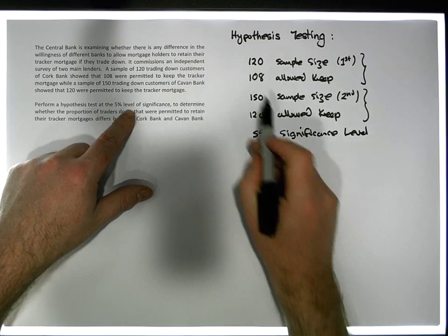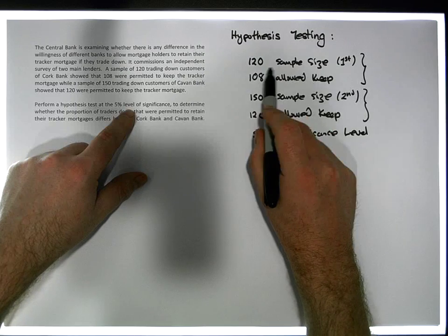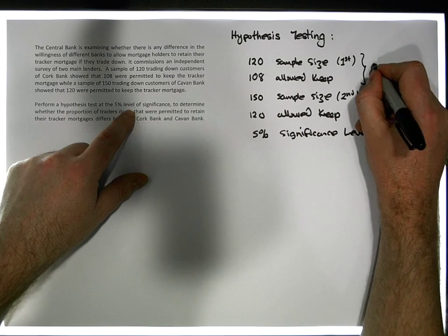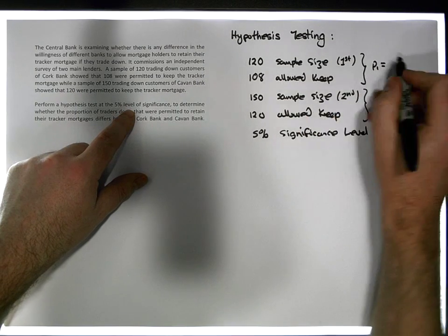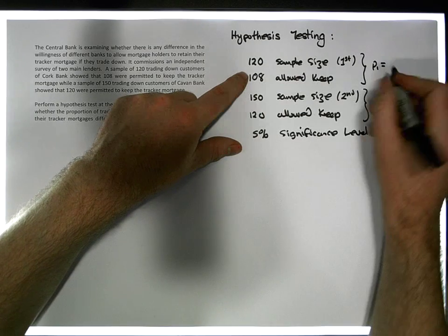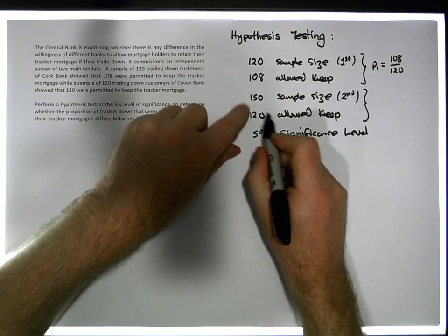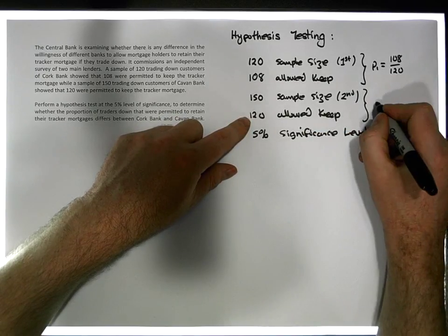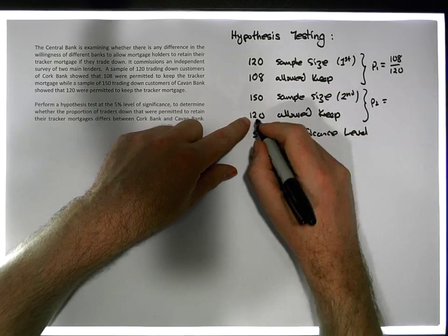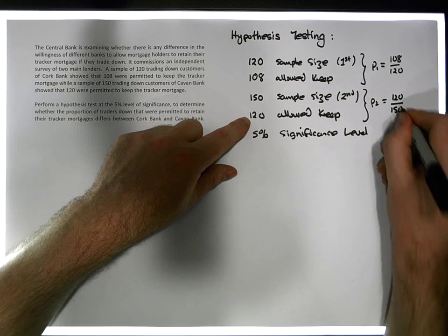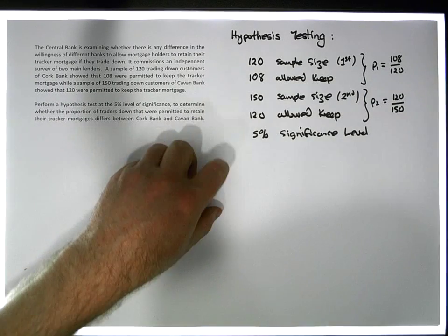Based off the first proportion, let's call this P1. P1 is going to be equal to 108 over 120. The second proportion for the second sample, let's call that P2, is 120 people relative to the 150 that were asked. So we have two proportions.